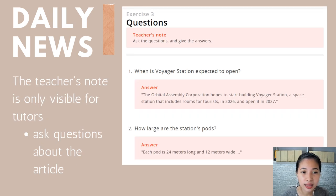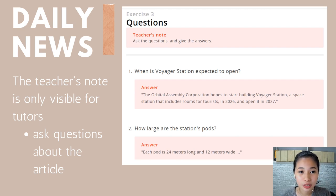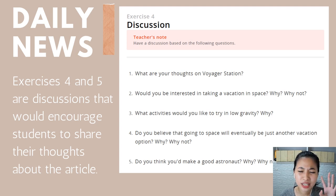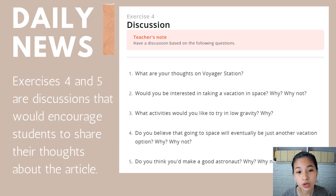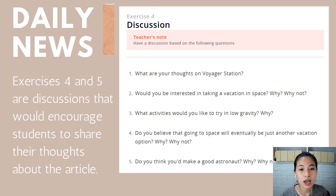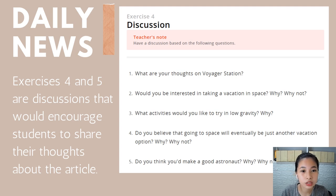Exercise 3 consists of questions about the article — note that the teacher's notes are only visible to tutors, not students. For example: 'When is the Voyager Station expected to open?' and the student answers. Exercises 4 and 5 are discussion exercises encouraging students to share their thoughts about the article. While they speak, it's encouraged that you type their sentences so that if you hear an error, you can type the correct sentence. After they answer, point out the error without using complex words.